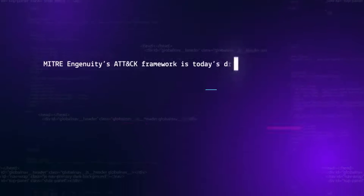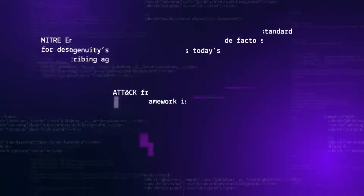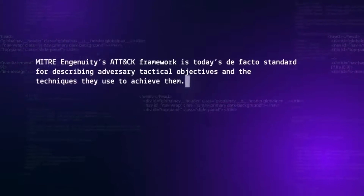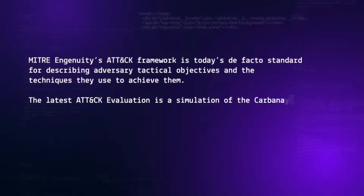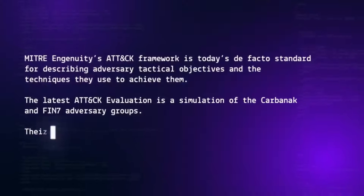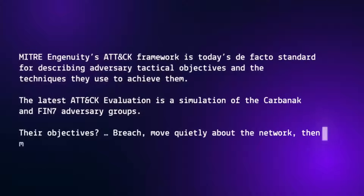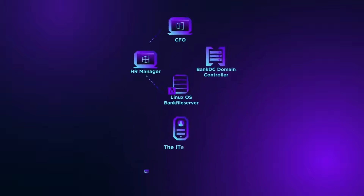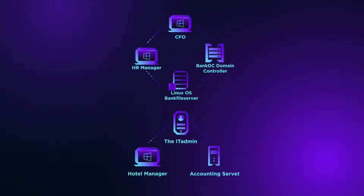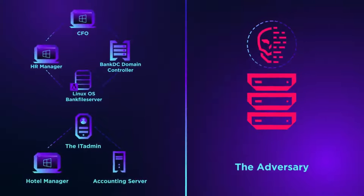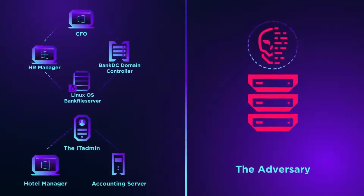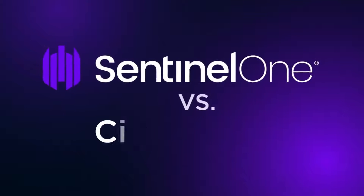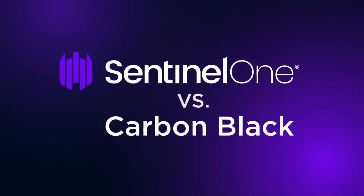MITRE Ingenuity's ATT&CK Framework is today's de facto standard for describing adversary tactical objectives and the techniques they use to achieve them. The latest ATT&CK evaluation is a simulation of the Carbonac and FIN7 adversary groups, whose objectives are to breach, move quietly about the network, then identify and steal financial data. This video highlights SentinelOne ATT&CK evaluation results compared against Carbon Black evaluation results.